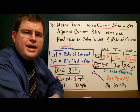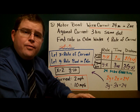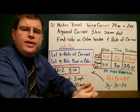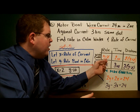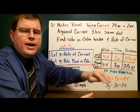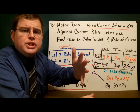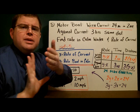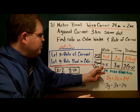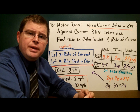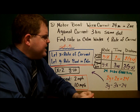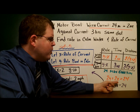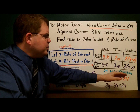Let x be the rate of the current and y be the rate of the boat in still water. When going with the current, the current pushes us along, so our effective speed is y plus x. When going against the current, the water pushes us back, so our speed is y minus x. Using distance equals rate times time: 2 times (y plus x) equals 24, and 3 times (y minus x) equals 24.